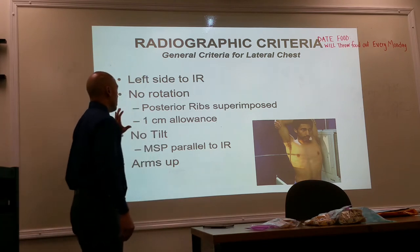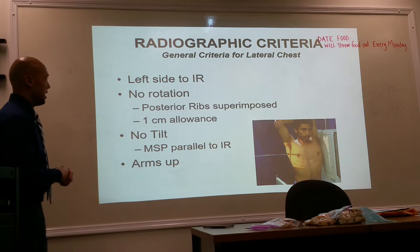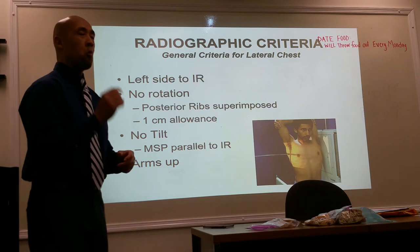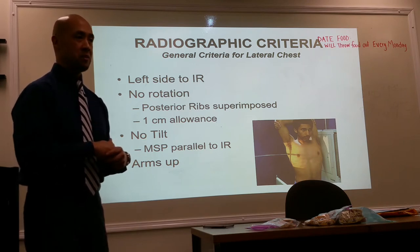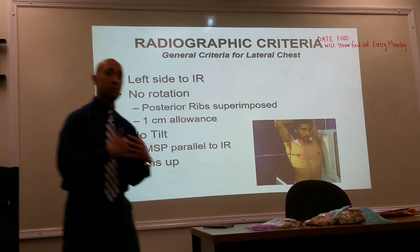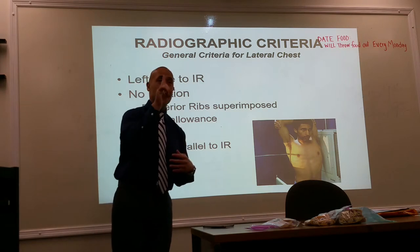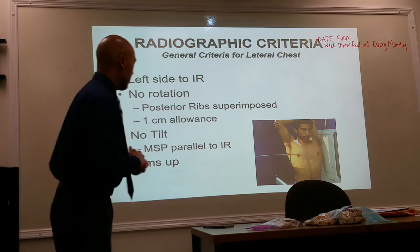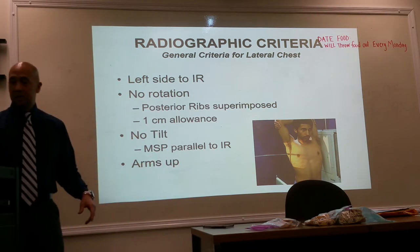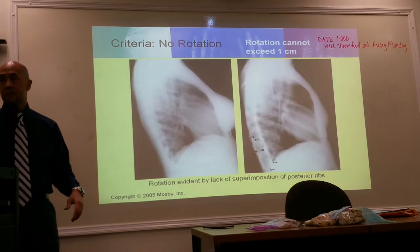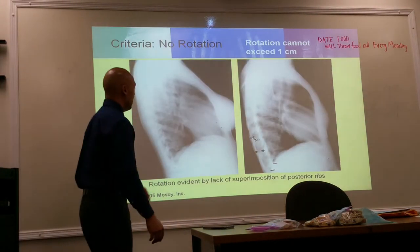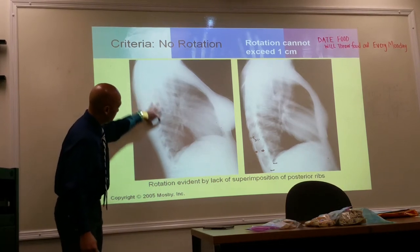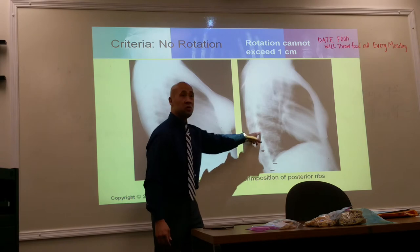To demonstrate no rotation on a lateral chest, we look for one set of posterior ribs — the posterior ribs should be superimposed. You should only see one set. A good lateral chest x-ray shows only one set of posterior ribs. If you see two sets, you have rotation.